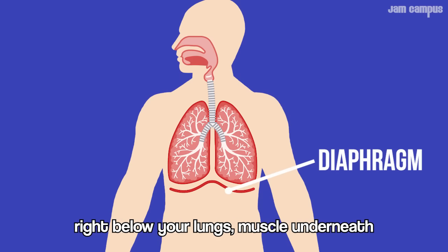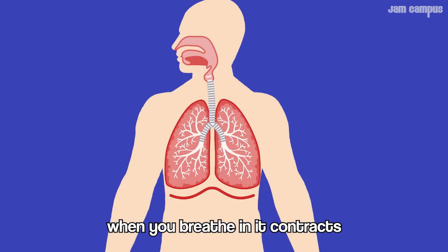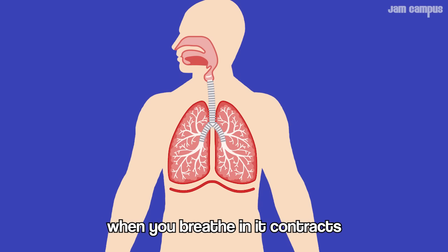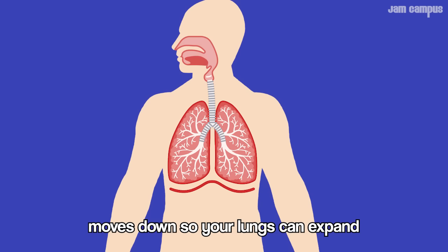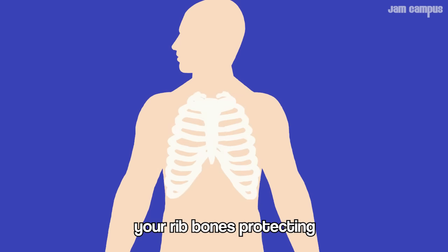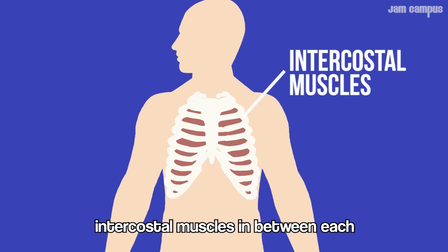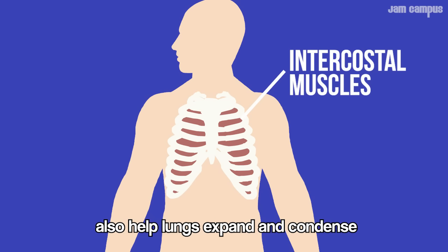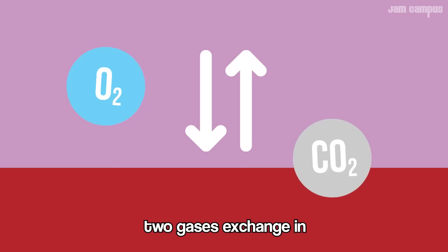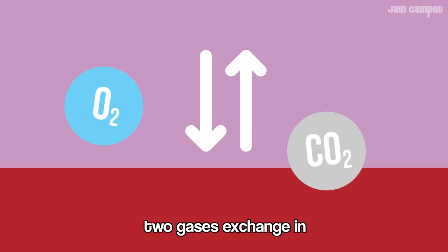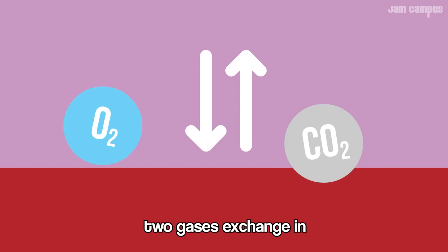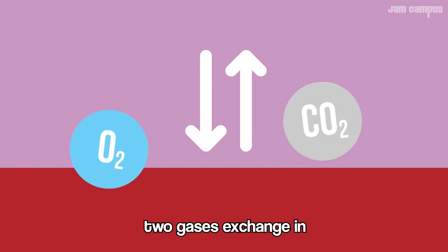Your diaphragm helps you breathe properly — your lungs' muscle underneath. When you breathe in, it contracts, moves down so your lungs can expand. Your rib bones protect, the intercostal muscles in between each also help lungs expand and condense — helpful, these muscles surrounding. Two gases exchange.